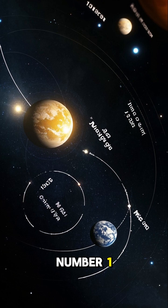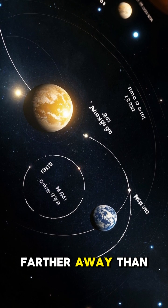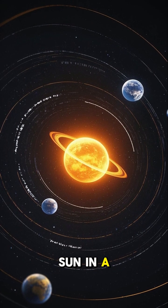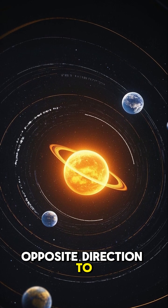Number one, although Venus is Earth's closest planetary neighbor, it is actually farther away than Mercury. This is because Venus orbits the sun in a retrograde motion, meaning that it moves in the opposite direction to Earth.